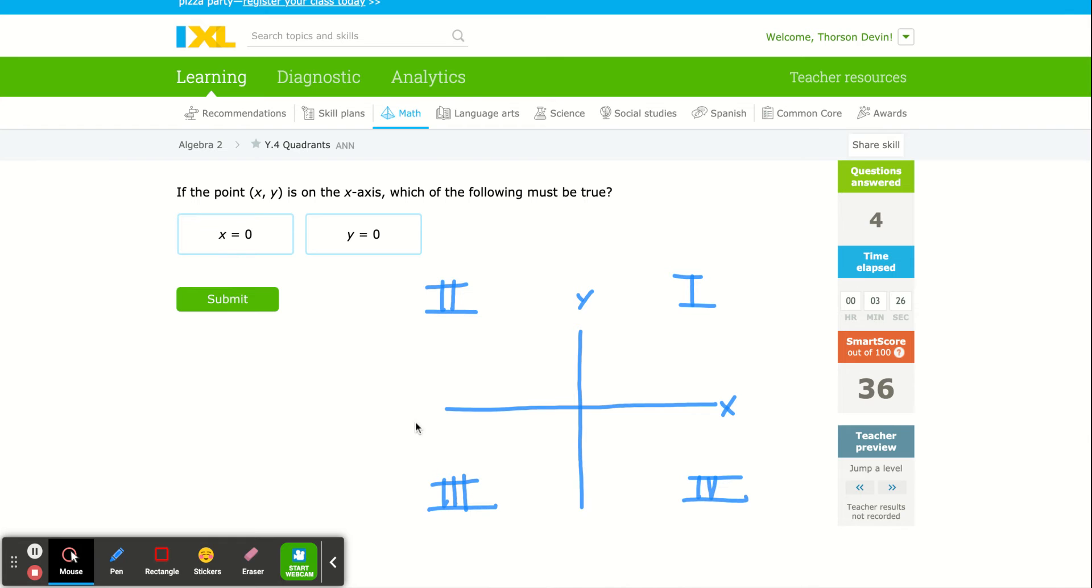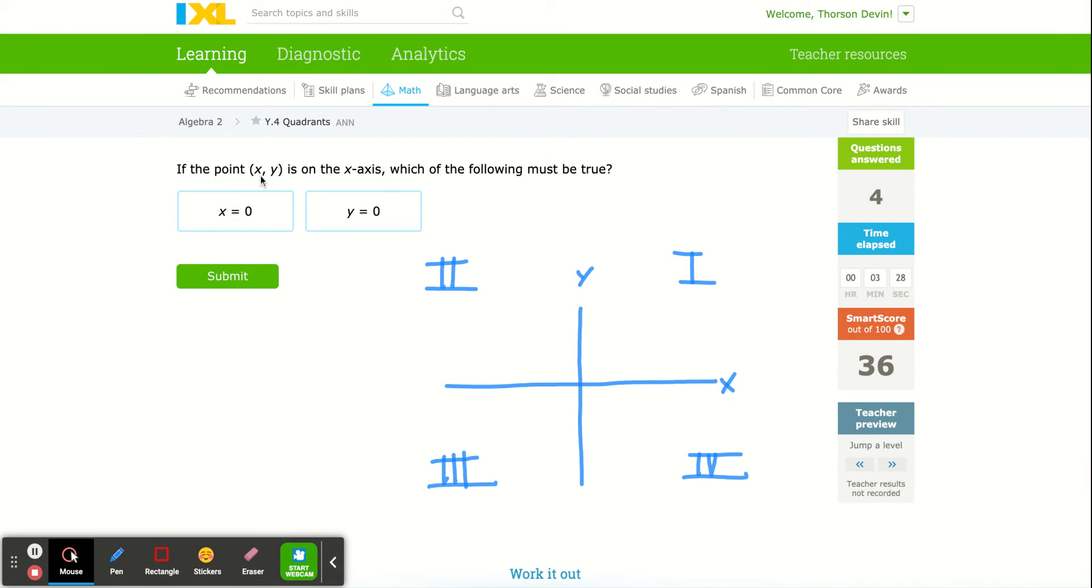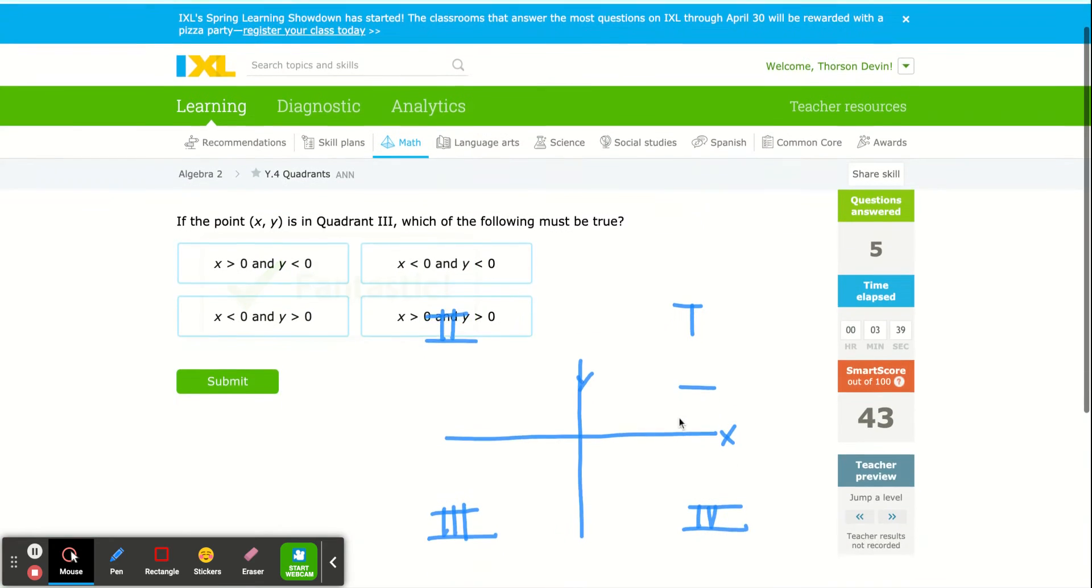If the point X, Y is on the X axis, then we're not vertically up or down. Y must be zero. Hopefully this is trivial for most of you.